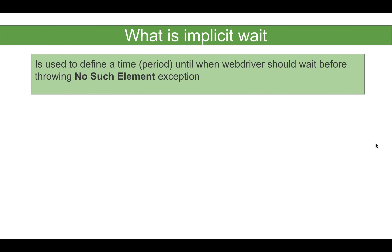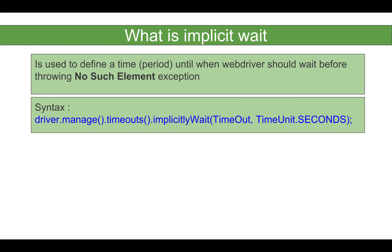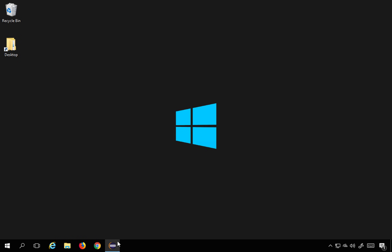Now let's look at what implicit wait is. In Selenium we have different types of waits: implicit, explicit, and fluent. In this session we will learn implicit and explicit waits, and fluent wait will be covered in the next session. With implicit wait, we can define a time period until which the WebDriver should wait before throwing a NoSuchElement exception.